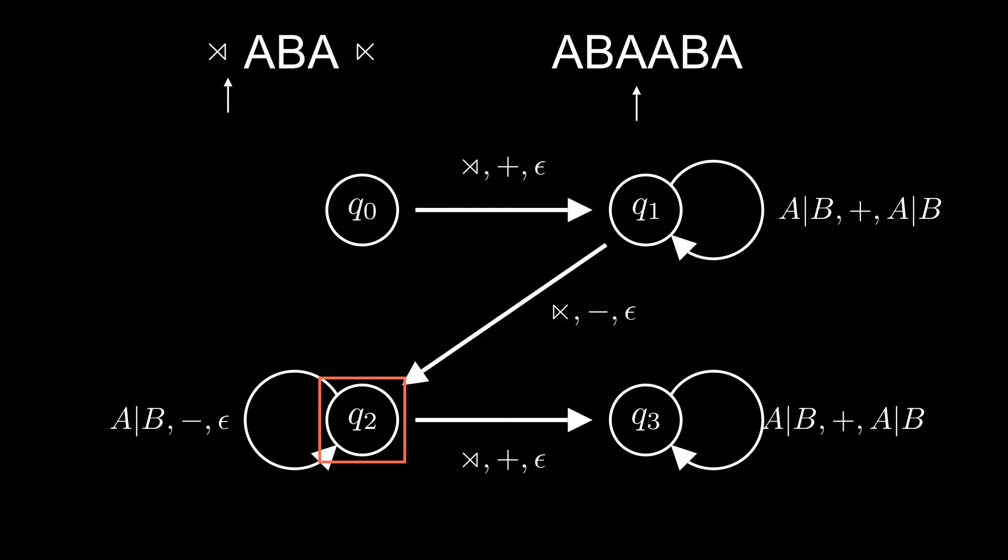When we read the left edge marker, we start moving forward again. Like in state q1, we loop through the input and output the letters we just read. We're left with ABAABA.